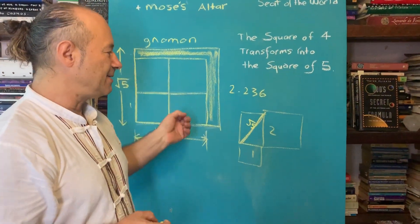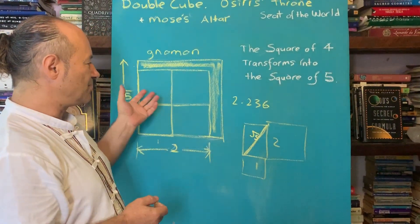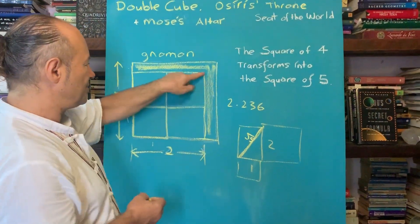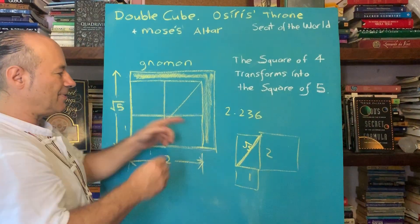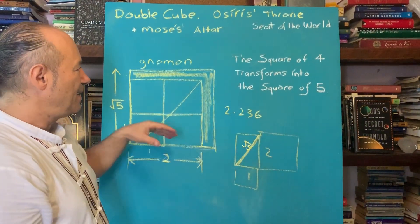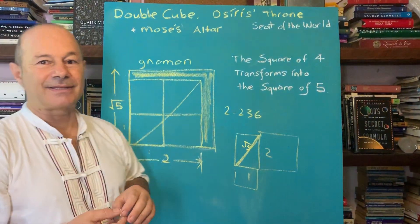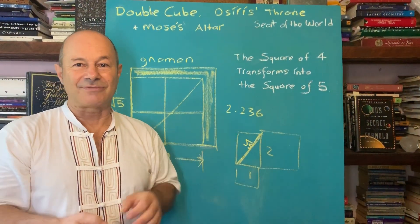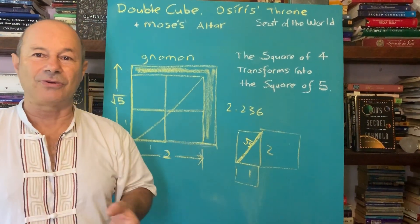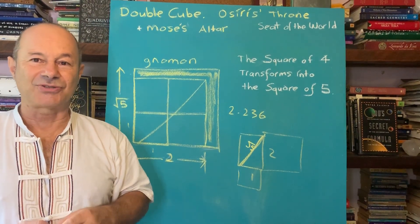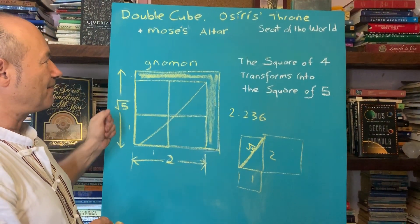If you want to become really efficient in maths, we need to know square root two — which is here — square root three in a triangle, and root five in the double square. I always found it fascinating that this ancient knowledge has already been given to us. That's why it's always called royal or secret, confidential knowledge — the information is there, but it's hidden.